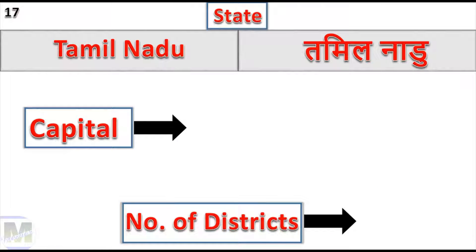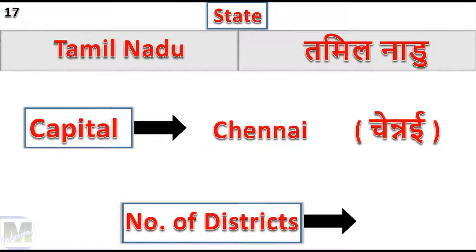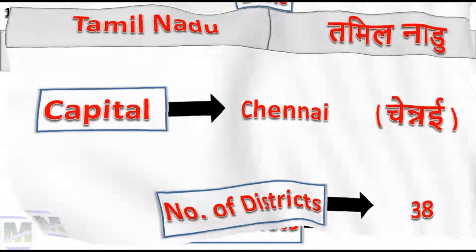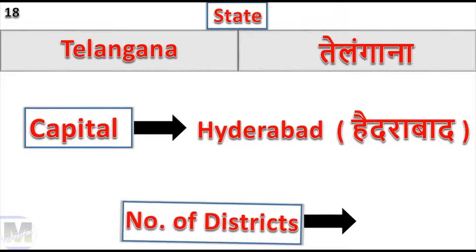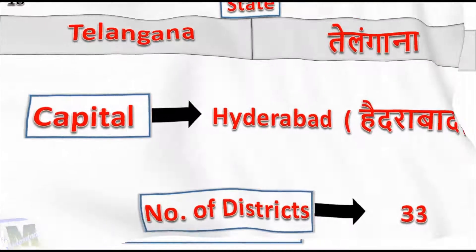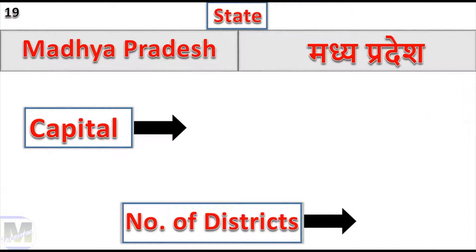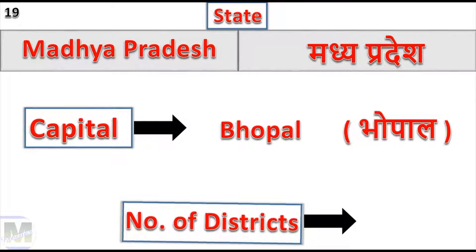Tamil Nadu: Capital Chennai, Number of Districts: 38. Telangana: Capital Hyderabad, Number of Districts: 33. Madhya Pradesh: Capital Bhopal, Number of Districts: 52.